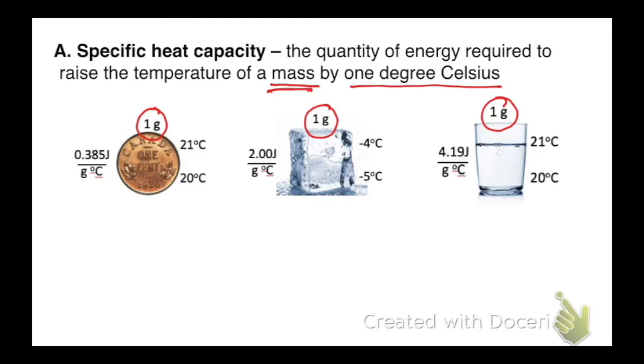So on this one, we're going to raise it one degree Celsius from 20 to 21 or from minus 5 to minus 4 or from 20 to 21. So this one gram is going to go up one degree Celsius. Each substance has a different specific heat capacity. So watch this.